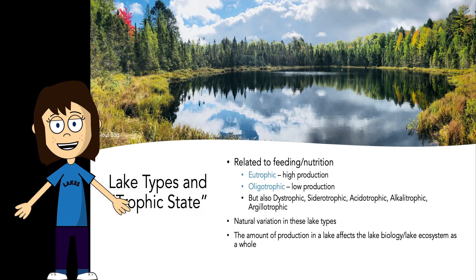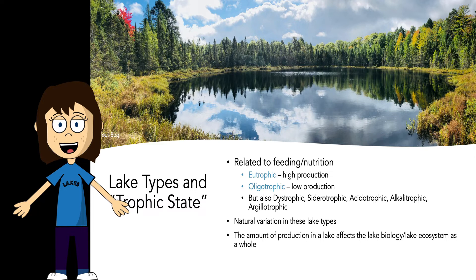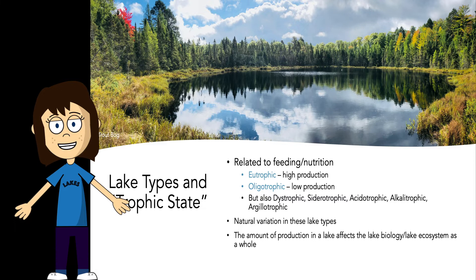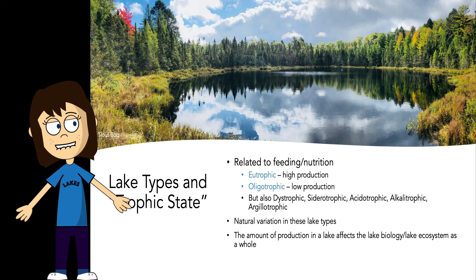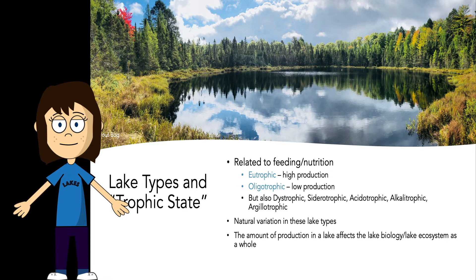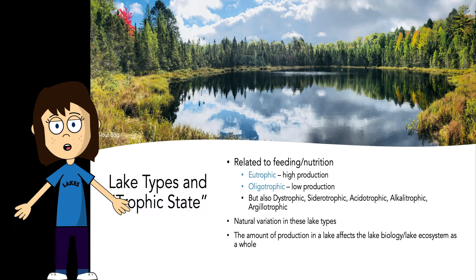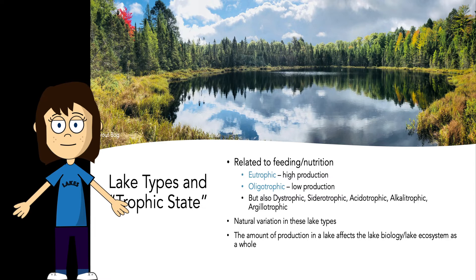There are also other trophic states, such as dystrophic lakes, which typically have very brown water because of high humic content — bog lakes are often dystrophic. There's also siderotrophic lakes with high iron content, alkylotrophic lakes with high calcium concentrations, acidotrophic lakes with low pH, and argilotrophic lakes with high clay turbidity. We'll mainly focus on the difference between oligotrophic and eutrophic lakes. Humans have definitely altered these natural lake types, and we now have a lot more eutrophic lakes than we would have naturally had. The amount of production in a lake affects the whole lake ecosystem — we care about eutrophication because of water quality, recreation, fish production, and global nutrient cycling like carbon storage.